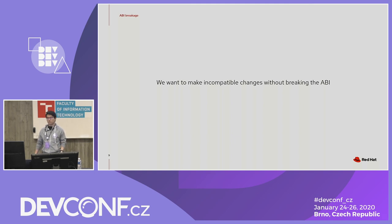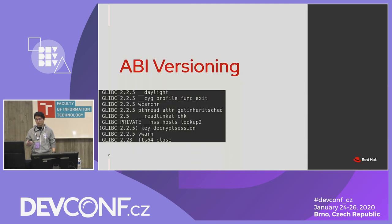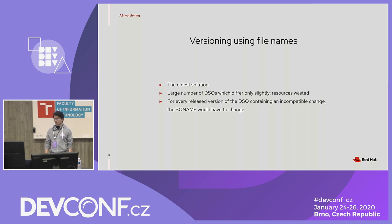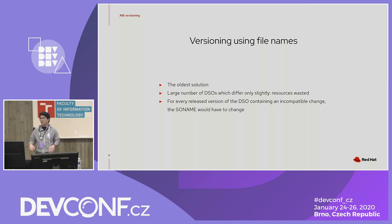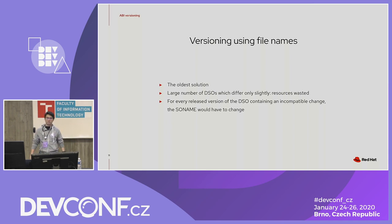How can you do that? The idea is that you have to keep all the symbols and APIs you had before in the new version of the library. The first idea to version the ABI would be to use different file names — for every new version of the library, you would create a new DSO file. But this is not smart because you would have to keep all the files for each version, otherwise you would break software depending on old versions of the library.